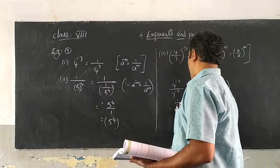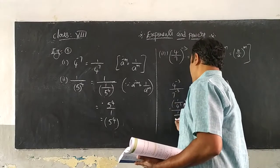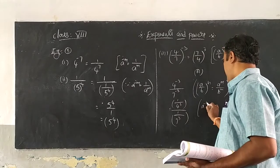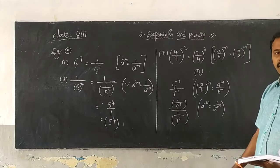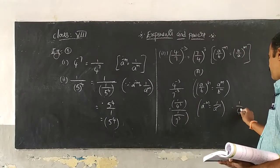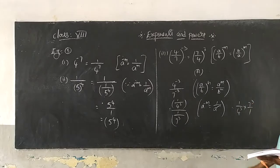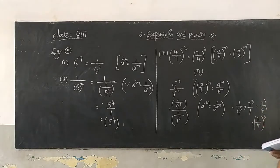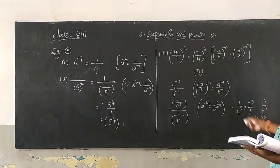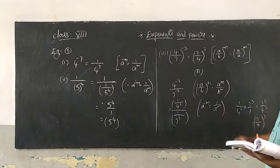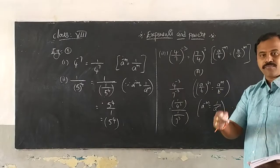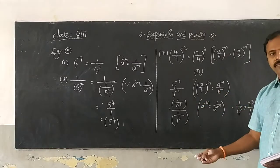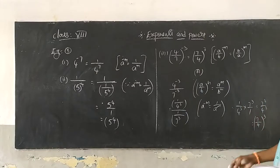Now change them using a power minus m equals 1 by a power m: you get 1 by 4 power 3 divided by 1 by 7 power 3, which becomes 1 by 4 power 3 multiplied by 7 power 3 by 1, giving 7 cube by 4 cube, which is 7 by 4 whole power 3. In the exam, if the question is for half a mark you can directly use the short method; if it is for 1 or 2 marks, use the step-by-step method.